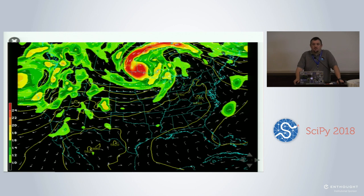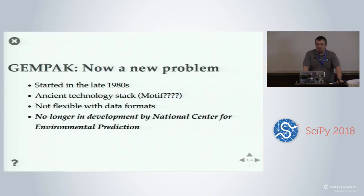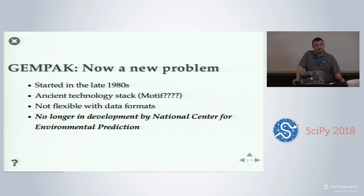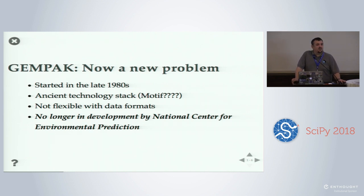Here's more of a static type image you'd be using GEMPACK to generate with a script. Now that we're in 2018 and not the 80s, GEMPACK has really been creaking under its age. You've got an ancient technology stack it's built on — those GUIs, it's Motif. On most platforms you can barely get those anymore. It's not flexible with regards to data formats, so getting data in NetCDF for instance is non-trivial to get into GEMPACK, and with new revisions you basically have to pre-process all your data to get it in.